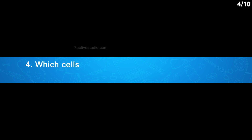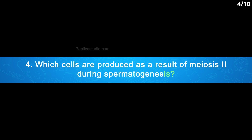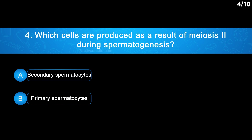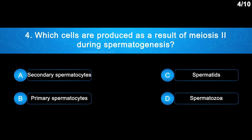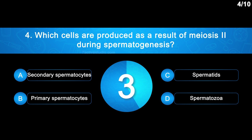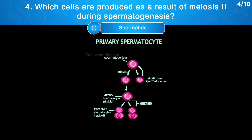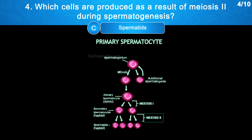Question 4: Which cells are produced as a result of meiosis 2 during spermatogenesis? Option A: Secondary spermatocytes. Option B: Primary spermatocytes. Option C: Spermatids. Option D: Spermatozoa. The correct answer is Option C — spermatids. Four haploid spermatids are produced when secondary spermatocytes go through meiosis 2.